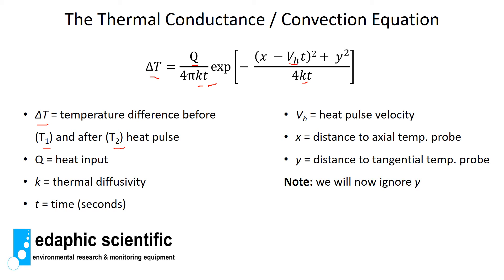Then we have VH which is our heat velocity or the velocity component of this equation. Then we have x which is the distance to the axial temperature probe, and y is the distance to the tangential temperature probe. Axial means in the up and down direction, so x would be the distance from the heater probe to the temperature probe that's either above or below the heater. Y means in the left or right direction, so the distance between the heater probe and the temperature probe to the left or the right.